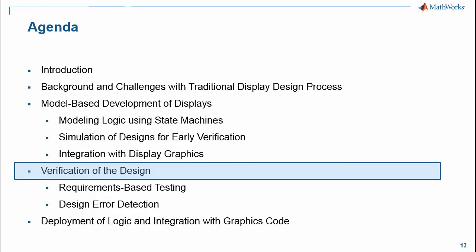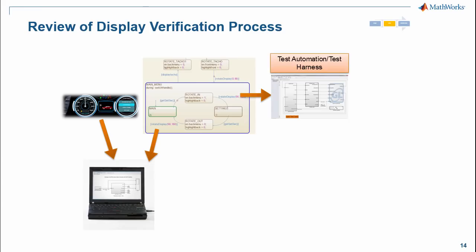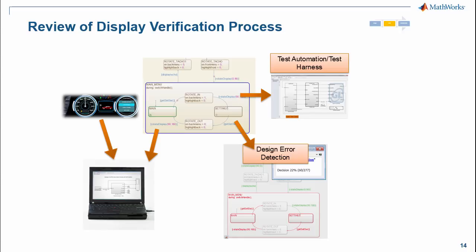Now that we've looked at how to develop display systems inside of Simulink, the next thing to discuss is how to verify this design. The next path is the automation of a test case and the building of a test harness. Up until this point we've had our top-level model with three different blocks: the one controlling switch inputs, the business logic developed inside of StateFlow, and the graphics portion. The second path is design error detection, with a specific focus today on dead logic detection — analyzing our model to check if there are portions that are provably not executing.